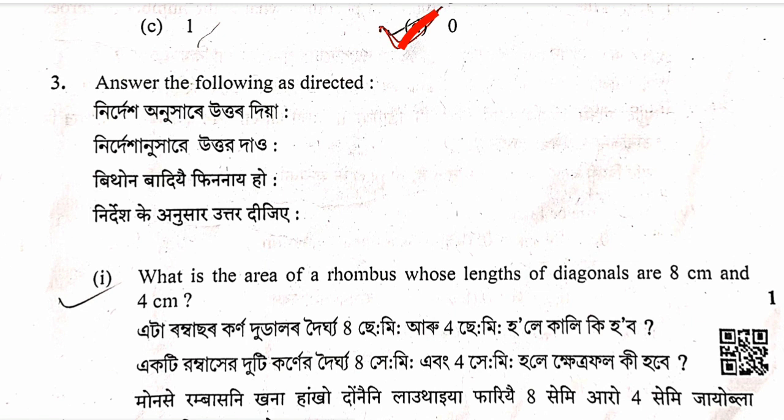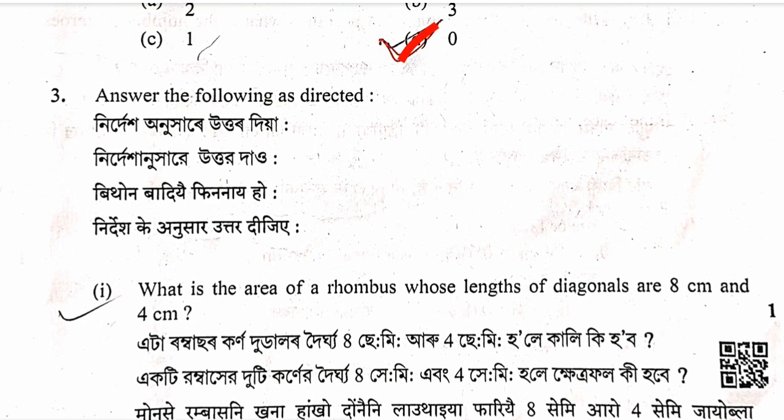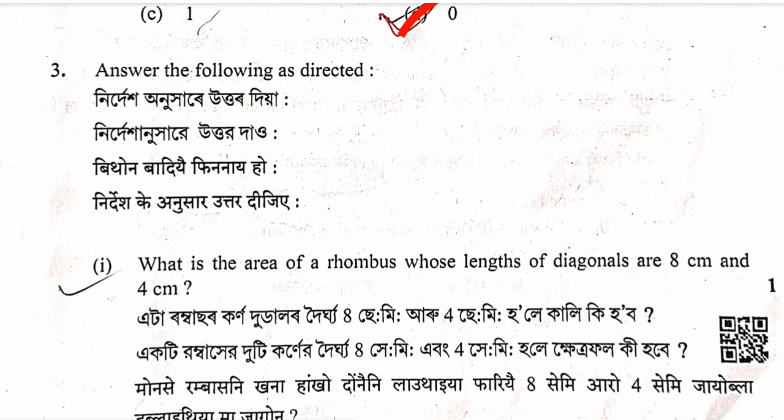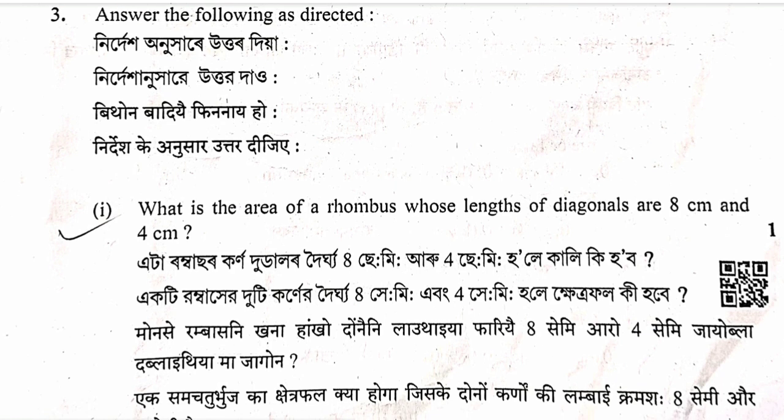Short answer question 1: What is the area of a rhombus whose diagonals are 8 centimeters and 4 centimeters? Area of rhombus equals half into product of the two diagonals equals half into 8 into 4 equals 16 square centimeters.